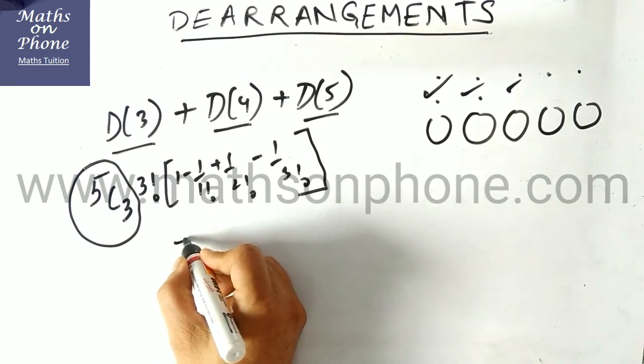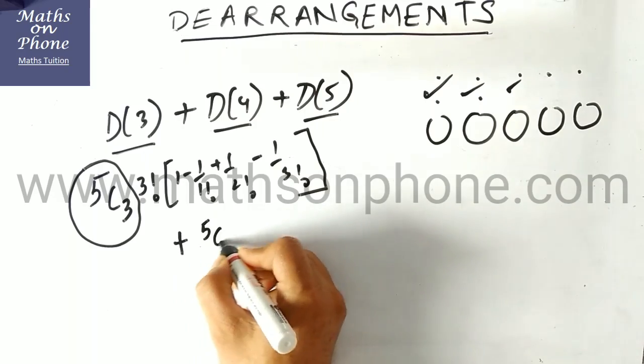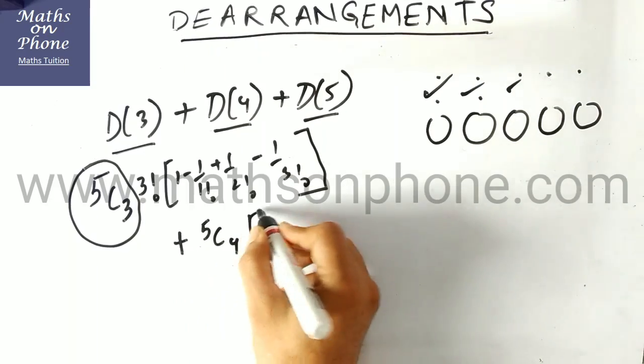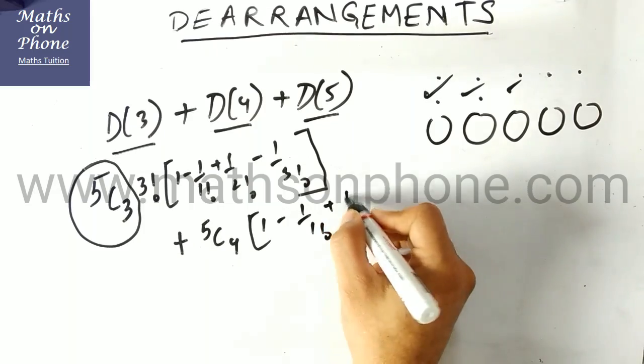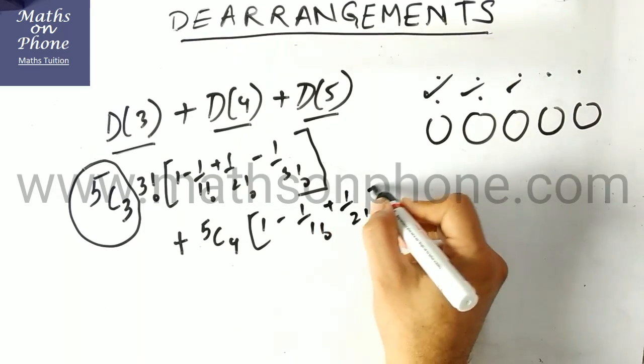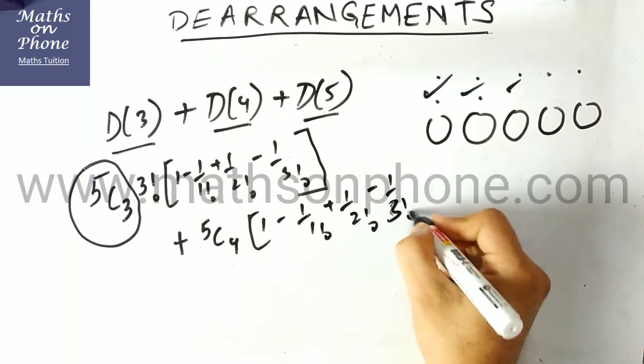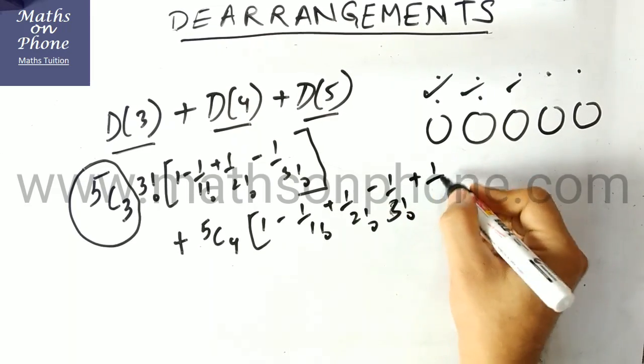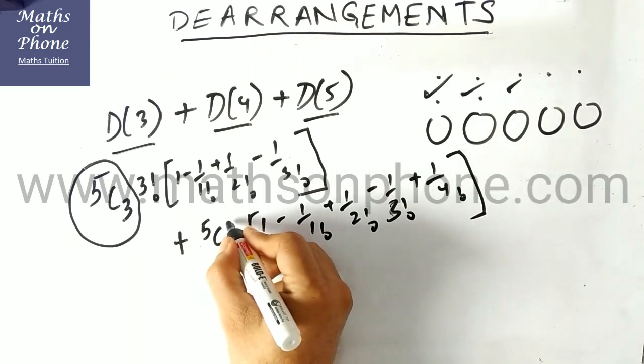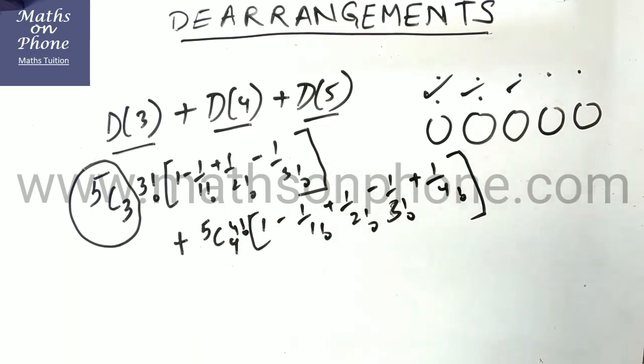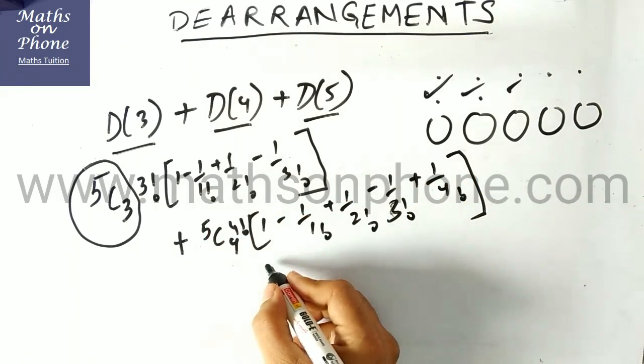In the case of D(4), what that will be? Firstly we need to select the 4 balls: 5C4, and it is 4 factorial [1 minus 1 by 1 factorial plus 1 by 2 factorial minus 1 by 3 factorial plus 1 by 4 factorial]. We need to stop here. So this is the derangement of the 4 things.